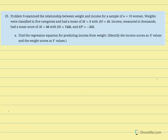We've already calculated the correlation between the variables of women's weight and income. We used a sample size of 10 women and categorized their weight. We calculated the mean of the weight categories equal to 3, with the sum of squared deviations equal to 20. For income measured in thousands, the average was equal to 66,000 with the sum of squared deviations equal to 7,430. That helped us calculate our sum of products of mean deviations equal to negative 359.